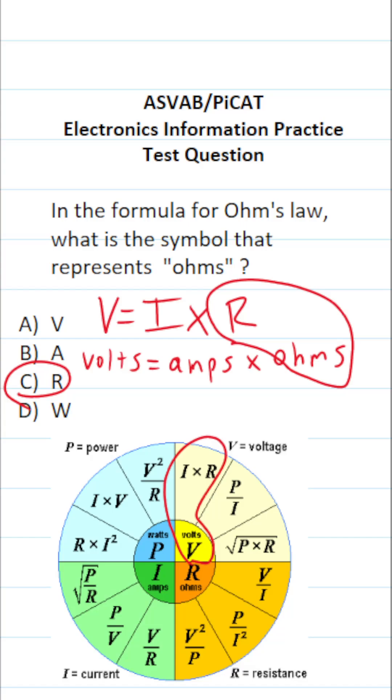Again, this electrical engineering wheel shows you all the relationships between volts, power, which is given in terms of watts, amps, which is the symbol I, and ohms, which stands for resistance, and is represented with the symbol R.